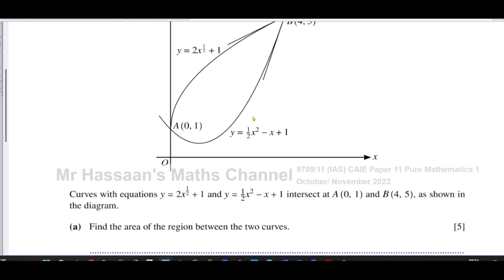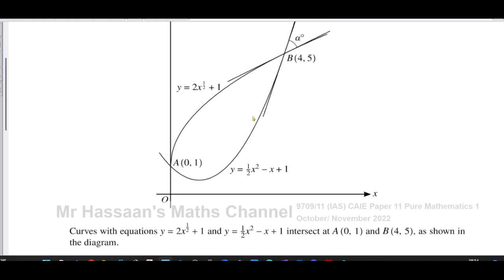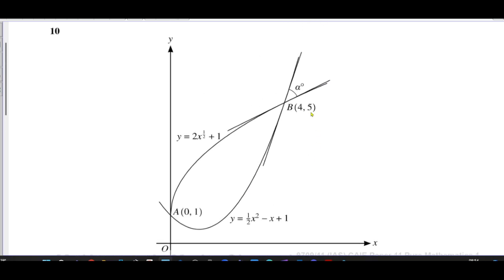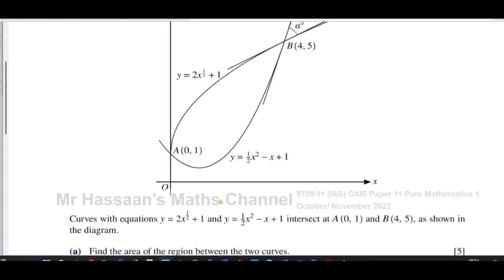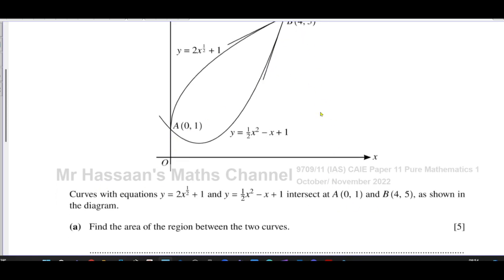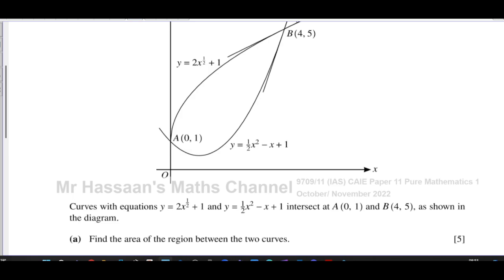This question is about integration and the area or region between these two curves. We have to find the area. We've got these two curves: y equals 2x to the power of a half plus 1, which is on top, and underneath you have a half x squared minus x plus 1. We're told they intersect at (0,1) and (4,5) as shown in the diagram.